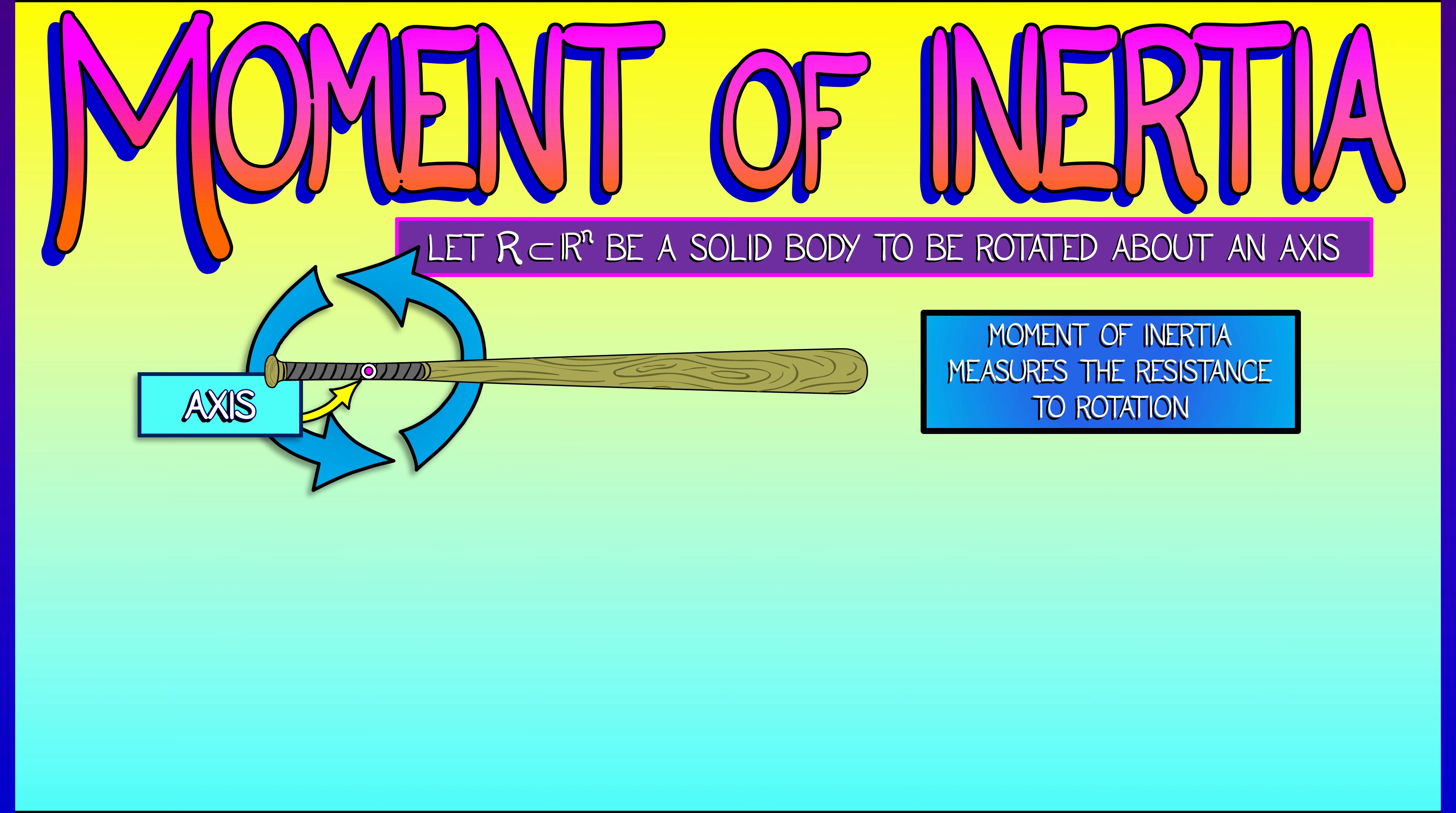dM is the mass element, and R is the distance from that mass element to the axis of rotation. So if you integrate that over the entire body, that gives you the moment of inertia.